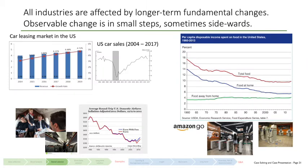Nevertheless, most companies and most industries do change, but typically over a longer period of time. The first example is the car leasing market in the U.S. Over a period of five years, leasing actually increased quite significantly — every year between three and five percent, which is quite a significant increase.